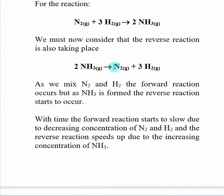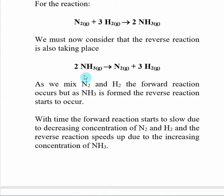Over time, if we let this reaction reach equilibrium — where we find a constant point — the forward reaction rate is going to decrease and the reverse reaction rate is going to increase, until those two reaction rates equal each other. When that happens, the concentrations of my reactants and products are going to remain constant over time. That's what we call equilibrium, where the rate of the forward reaction and the rate of the reverse reaction are equal to each other, and the concentrations of my species do not change.